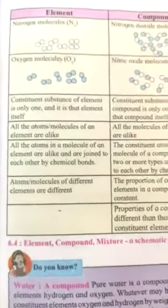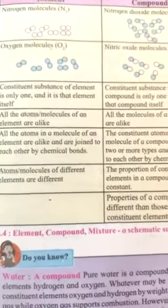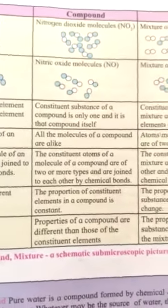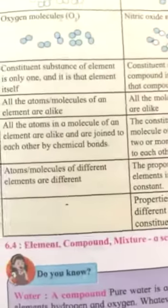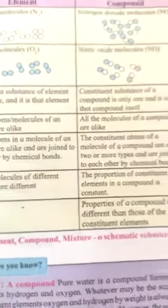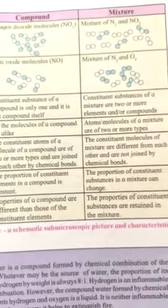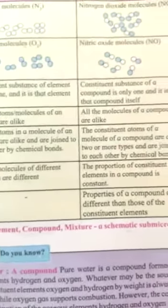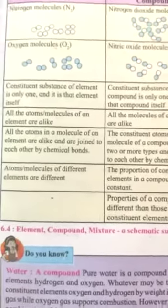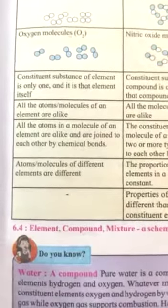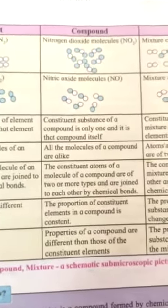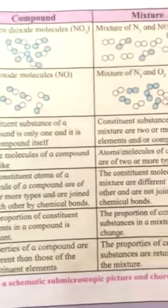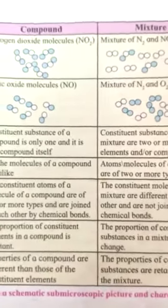There is a difference between elements, compounds, and mixtures. An element example is nitrogen N2, nitrogen dioxide is a compound, and a mixture of N2 and other elements is a mixture. In an element, the constituent substance is only one. In a compound, it may be one type of compound. And in a mixture, it may be two or more elements.